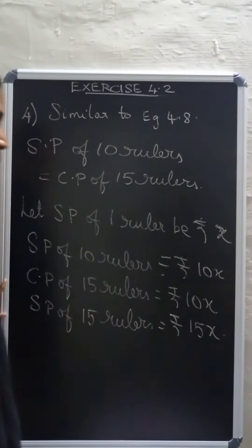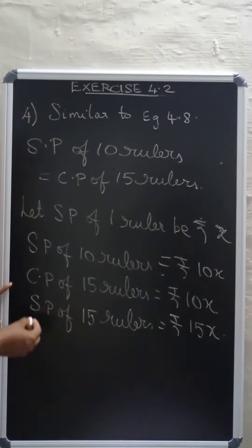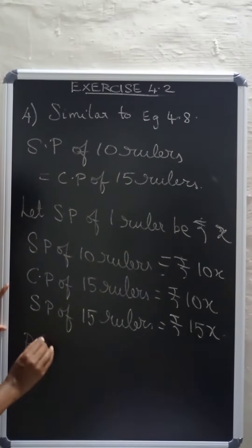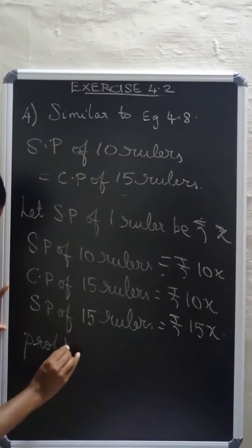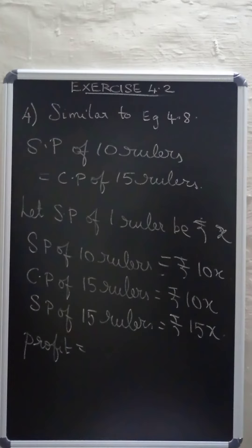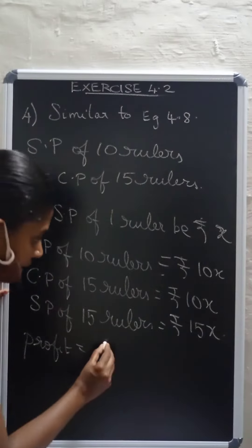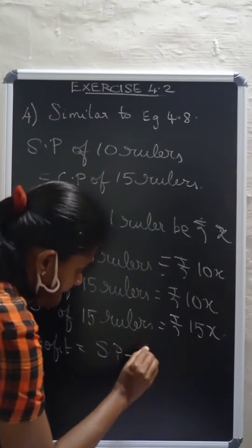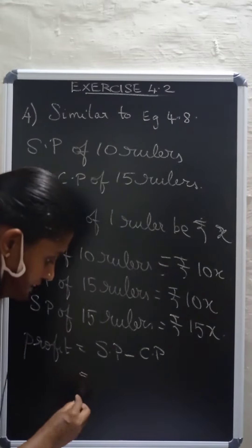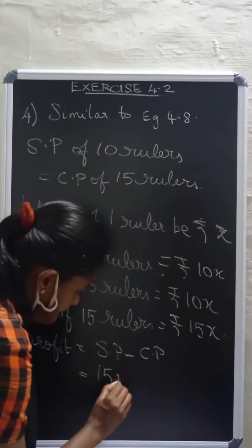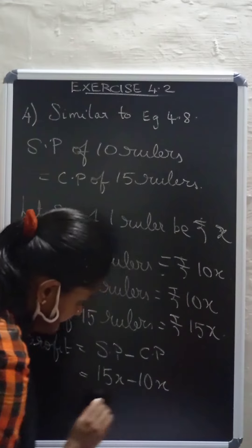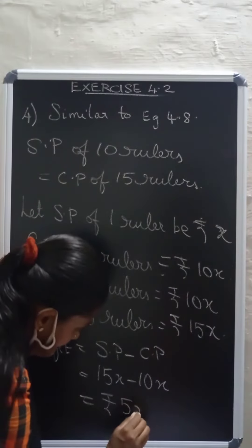Cost price of 1 ruler equals 10x divided by 15, which equals 2x divided by 3.